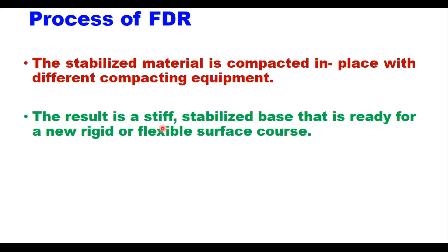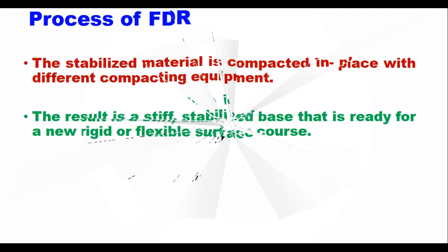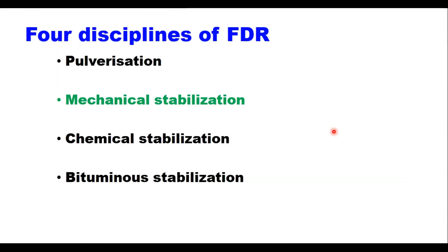Above this stabilized base, a thin or thick bituminous layer is provided. FDR is very suitable for parking lots, low volume roads, secondary roads, and city roads, but can be used on interstate highways as well. There are four disciplines of FDR: pulverization, mechanical stabilization, chemical stabilization, and bituminous stabilization.